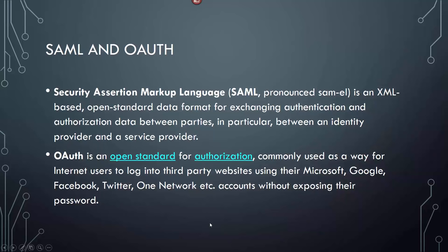SAML — Security Assertion Markup Language — is basically Active Directory in the cloud. It's an XML-based open standard data format for exchanging authentication and authorization data between parties, in particular between an identity provider and a service provider. If you have something like Amazon and want to run Active Directory at your site, you basically need to use SAML. OAuth — open standard for authorization — is commonly used as a way for internet users to log on to third-party websites. You've seen it on LinkedIn or Facebook where a third-party says to verify your credentials and then authenticate you — they're using OAuth to do that.